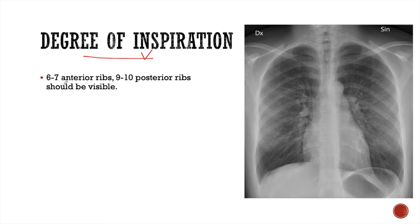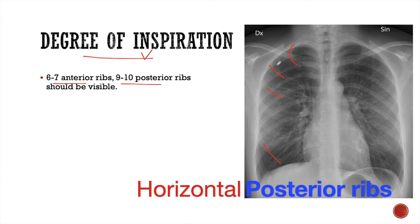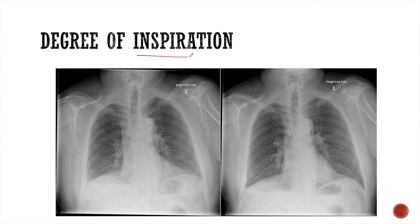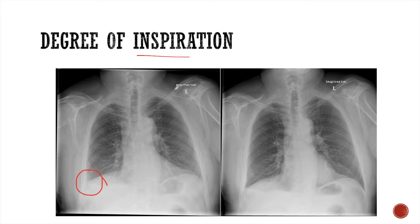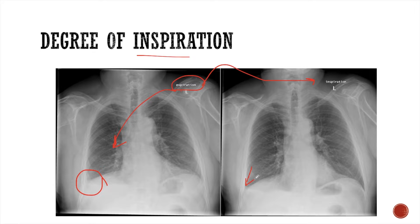The next factor is the degree of inspiration. If inspiration is adequate, six to seven anterior ribs and nine to ten posterior ribs should be visible. The oblique ones are the anterior ribs and the horizontal ones are the posterior ribs. When inspiration is not adequate, the costophrenic angles may appear blunted and mimic pleural effusion. In an expiratory x-ray, there is blunting of the costophrenic angle, but when the patient takes an adequate inspiration, the costophrenic angles are sharp and there is no pleural effusion.